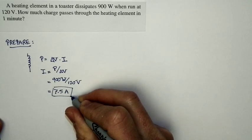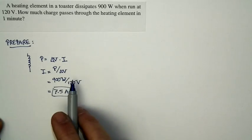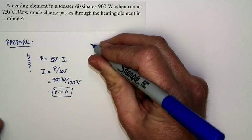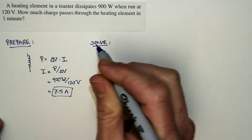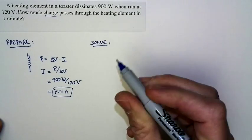And I'm going to treat that as a preparation because that's really just characterizing the toaster. And with that number, we're ready to do a solution because we're asked to find the charge that passes through the toaster.